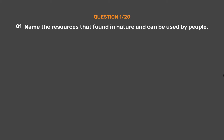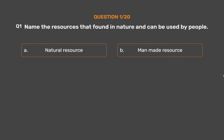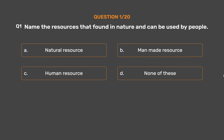Question number 1: Name the resources that are found in nature and can be used by people. Option A: Natural resource. Option B: Man-made resource. Option C: Human resource. Option D: None of these.